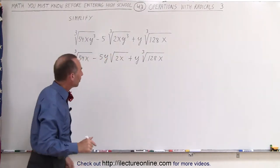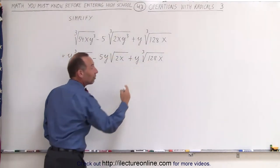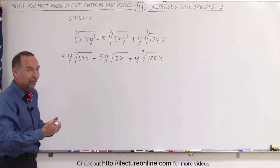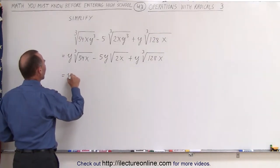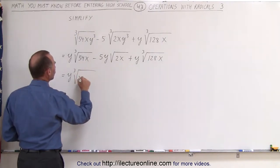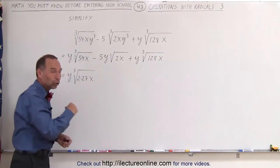Now we can simplify, or not simplify, but rewrite 54 and 128 in such a way that we have it as a product of something multiplied times something cubed. Let me explain what I just said. This is equal to y times the cube root of, 54 can be written as 2 times 27 times x, because 27 is the cube of 3,